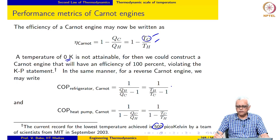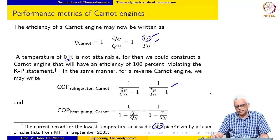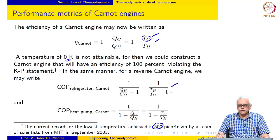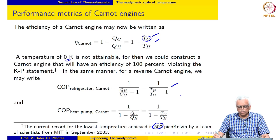In the same manner, for a Carnot refrigerator the COP is 1 over (TH/TC − 1), and for a Carnot heat pump the COP can be written accordingly.